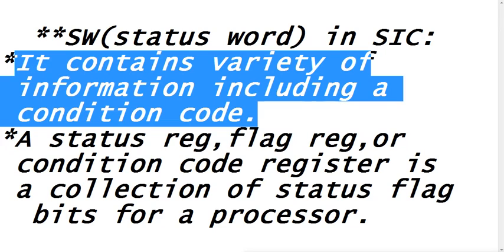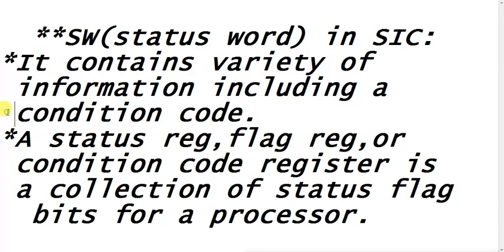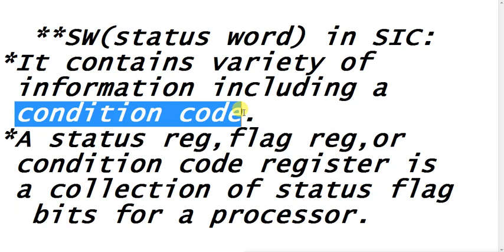The status word register contains a variety of information including a condition code. Condition code is a code generated when a condition is set up — like in a flag register, when we set a flag, some particular bit sequence such as 0, 1, 1, 0 is set up. That is a condition code. For true or false, you take a corresponding condition code — for example 0 or 1 — that is set up in the status word register.